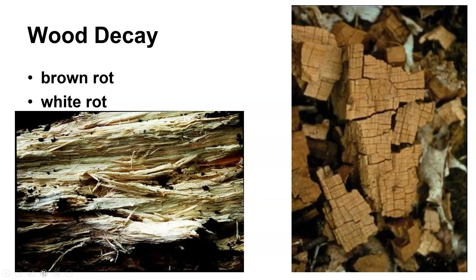This brown rot is often what we call a cubicle type rot. You can see the little pieces falling into cubes, which is related to the type of fiber that the wood actually produces.